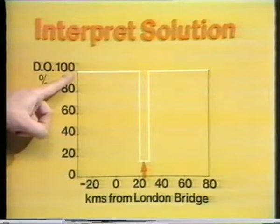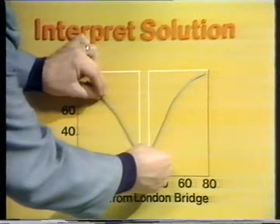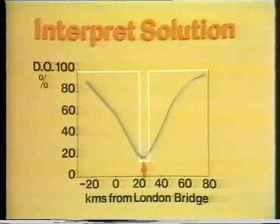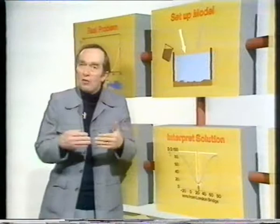But that doesn't look at all like the sag curves we saw before. The reason is fairly obvious — we've got the river divided up into segments that are completely separated from each other. There is no interaction between these segments, and yet these ponds are joined up. That interaction is really quite complicated, and the mathematics gets a bit complicated from now on.